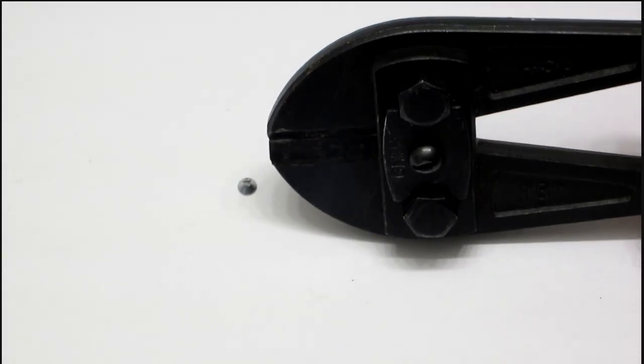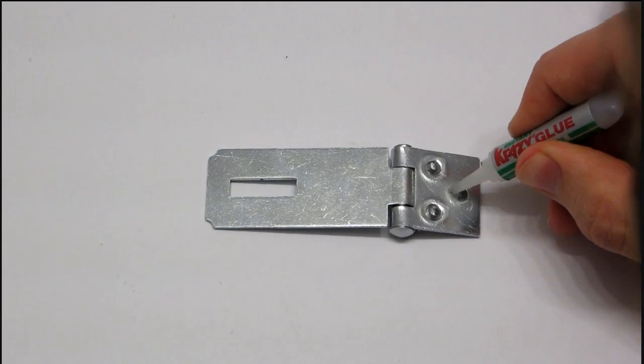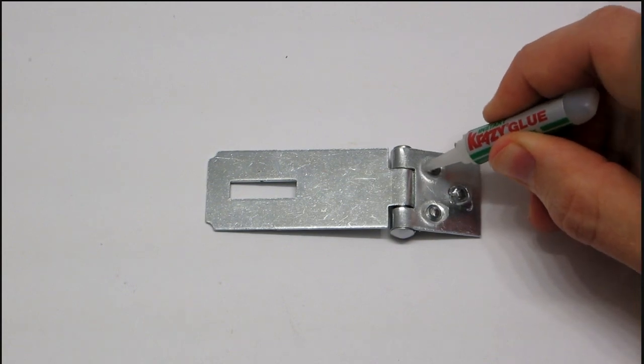Start by cutting off the threads from the screws and filing down the cut end. Then insert the screw heads into the holes of the hasp and glue them in place.